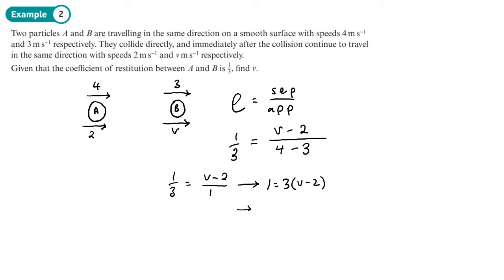So one third equals (v minus 2) over 1. Cross-multiplying gives 1 equals 3(v minus 2), so v equals one third plus 2, which is two and a third metres per second. This has to be bigger than 2, and it is, so we know the answer is correct.